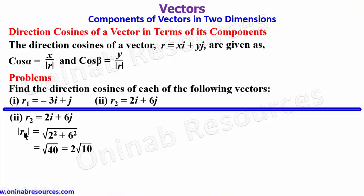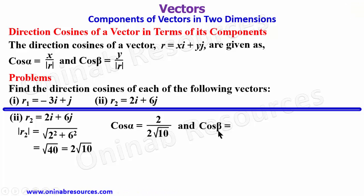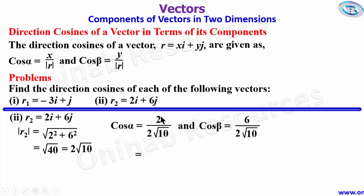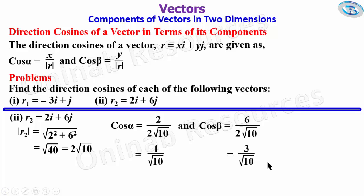We go ahead to find the direction cosines of r2. Starting with cos α, x = 2 (the coefficient of i), so cos α = 2 / (2√10) = 1 / √10. And cos β, where y = 6, gives us 6 / (2√10) = 3 / √10. That's all for the direction cosines of a vector in terms of its components.